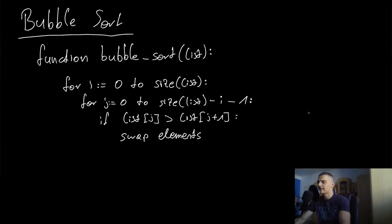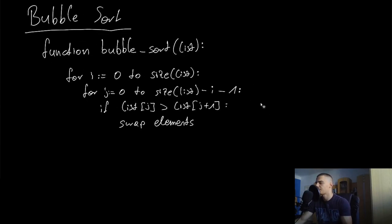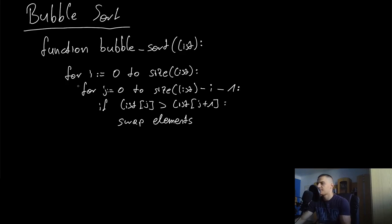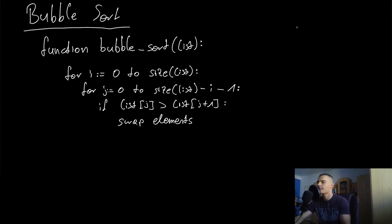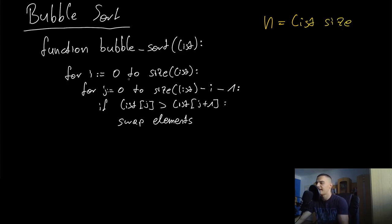Now let's look at the pseudocode. The function is called bubble sort and we pass a list to it. There are two loops — the first loop runs from i equals zero to the size of the list. The list size is n, so this outer loop runs n times.